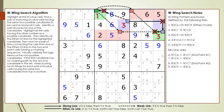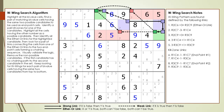Scenario 1: a value of 3 in cell 2,6 — a chaining sequence results in a value of 1 in cell 1,4, and all target candidates are killed. Scenario 2: no value of 3 in cell 2,6 — this results in a value of 1 in cell 3,9, and all target candidates are killed. Scenario 3: a value of 3 in cell 2,9 — this results in a value of 1 in cell 3,9, and all target candidates are killed. Scenario 4: no value of 3 in cell 2,9 — this results in a value of 1 in cell 1,4, and all target candidates are killed.